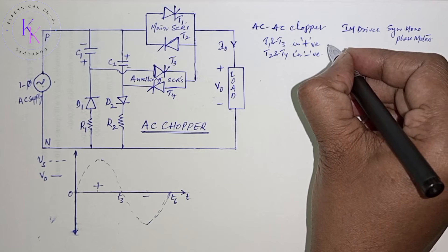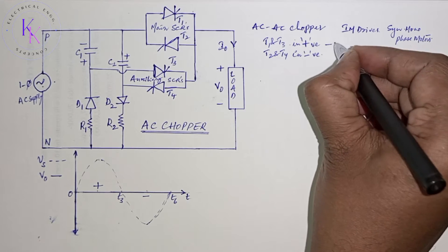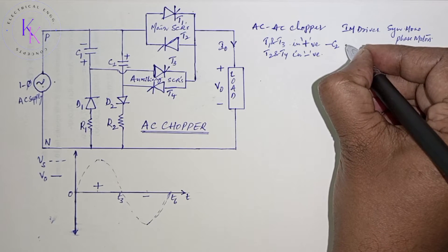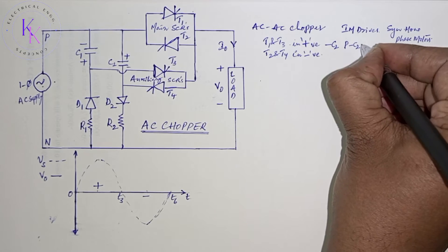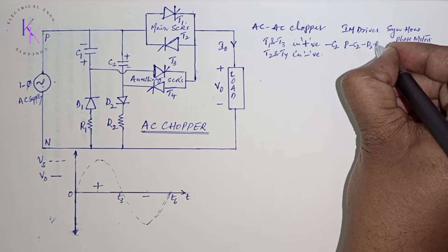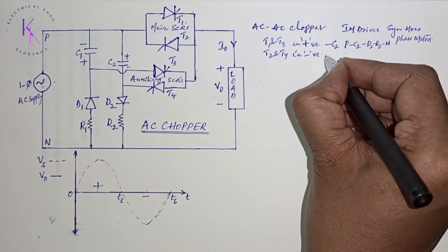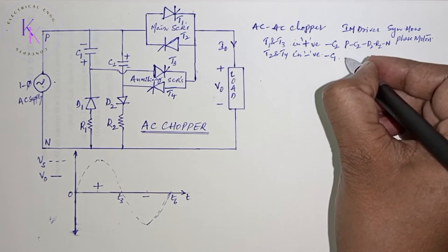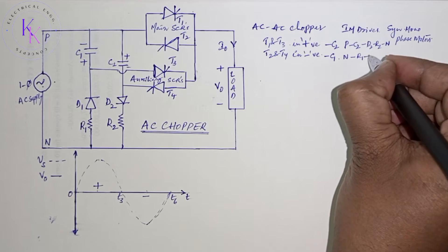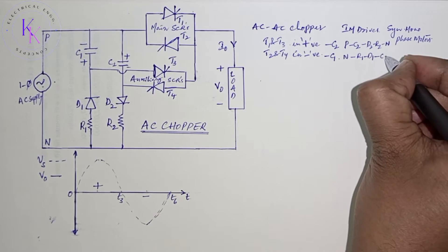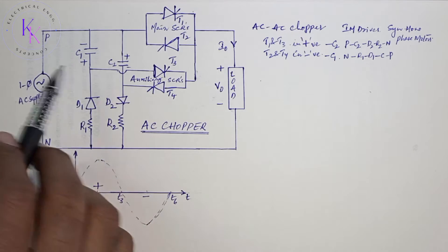In positive half cycle, the capacitor C2 is charged through P C2 D2 R2 to the negative. In negative half cycle, C1 is charged through N R1 D1 C2 with the polarity shown in this figure.